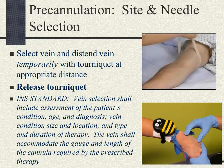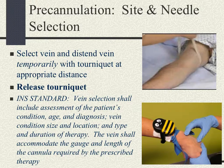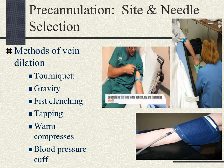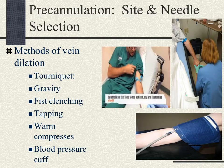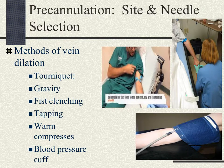If the first attempt at cannulation fails, you will go up and not down the extremity. If there is too much hair at the site, we're not going to shave it — we're going to use clippers. Once we've determined which vein to use, we will dilate the vein using the tourniquet, gravity, fist clenching, or lightly tapping. Be careful not to tap too hard, and don't tap if the patient will be receiving chemo or anticoagulants.